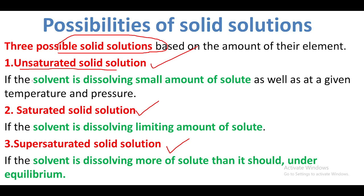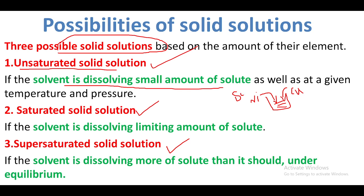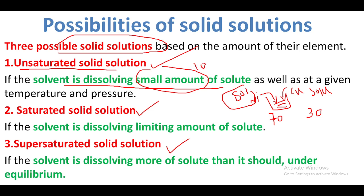In an unsaturated solid solution, the solvent dissolves a small amount of solute. For example, if nickel is 70 percent and copper is 30 percent — but only a small amount such as 10 percent of copper dissolves into nickel — this is called an unsaturated solid solution.